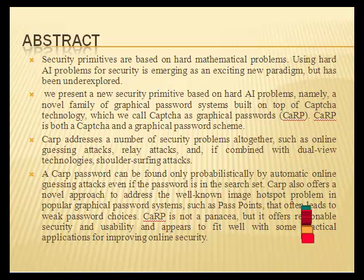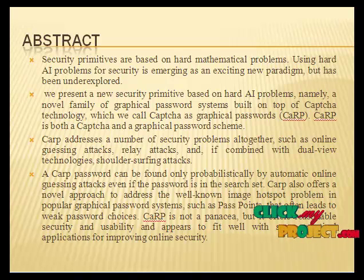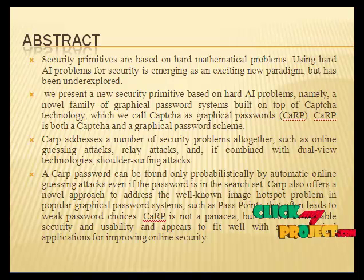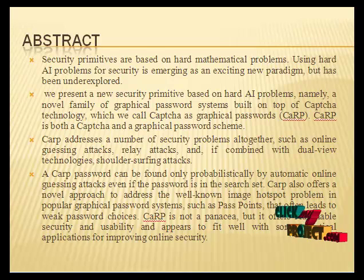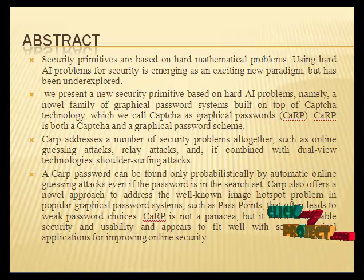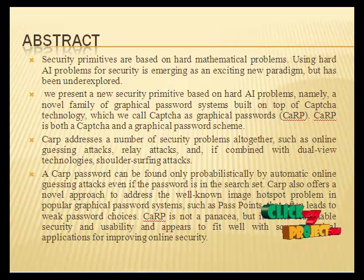In our proposed method, we introduce a new security primitive based on hard AI problems named as CARP, which acts as a CAPTCHA as a graphical password. CARP is a click-based graphical password where a sequence of clicks on an image is used to derive a password. Unlike other click-based graphical passwords, images used in CARP are CAPTCHA challenges and a new CARP image is generated for every login attempt.